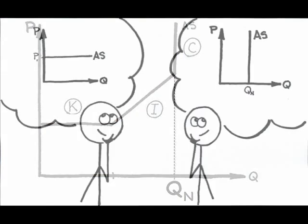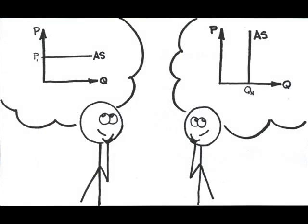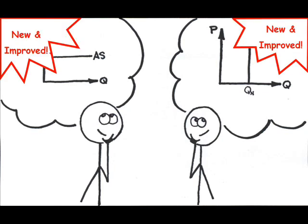Over the years, as one model falls into disfavor and another takes its place, invariably, some academic who liked the old model will come up with a new, more updated version to make the old model more attractive. Hence, new classical economists and new Keynesian economists.